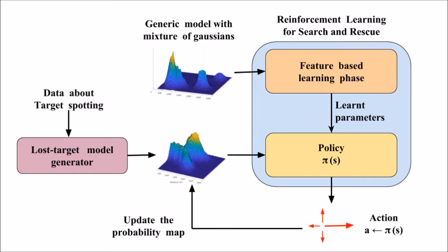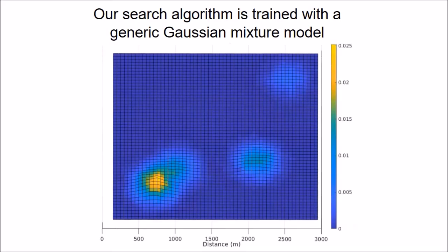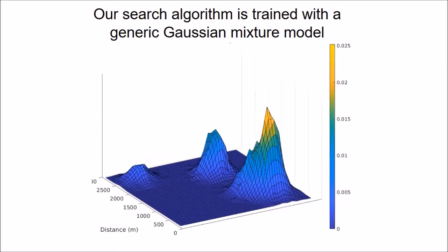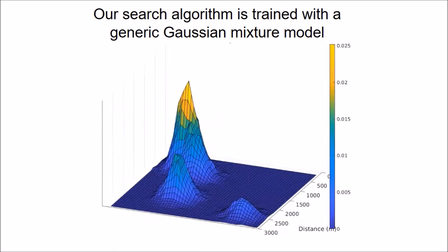Overview of our system is presented in this diagram. Our algorithm is trained with a generic model for a lost target. We use a probability distribution model generated using a mixture of Gaussians to train our policy search algorithm.